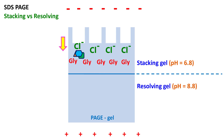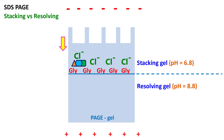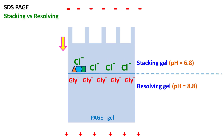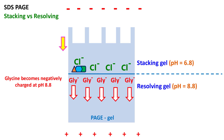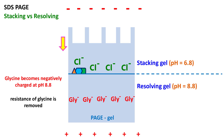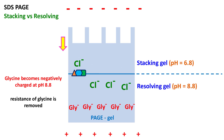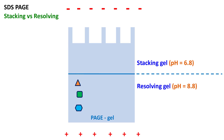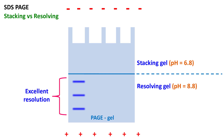The protein molecules gradually move forward in the stacking gel due to the push of chloride ions from behind. When they reach the resolving gel, something amazing happens. The resolving gel has a pH of 8.8, and at this pH glycine has a net negative charge. As a result, glycine molecules start moving. At this stage, protein molecules are stacked in one line, so when they travel through the resolving gel, they are separated according to size and the resolution obtained is excellent.